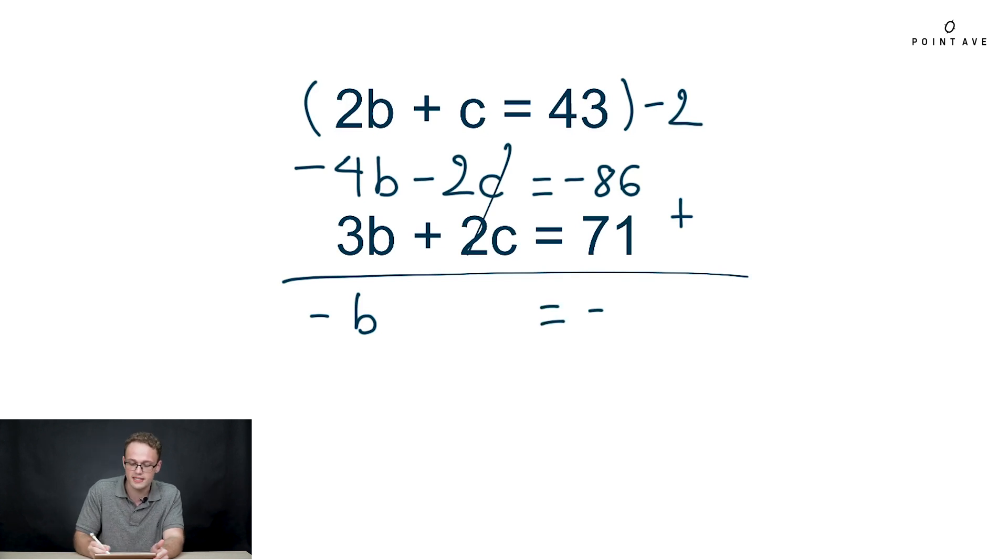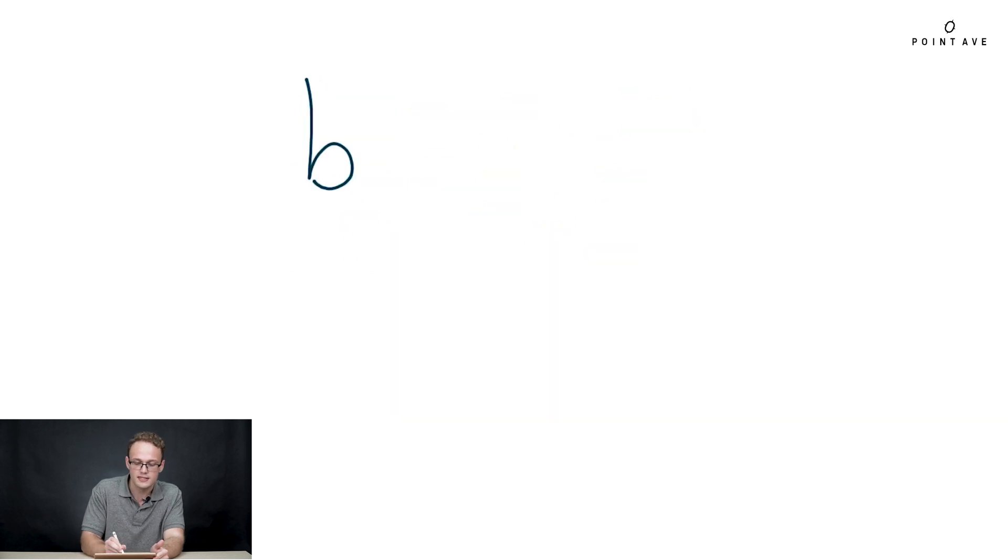And we get negative B equals negative 15, and with that we easily say B equals 15. Great, we know how many brownies we've sold.